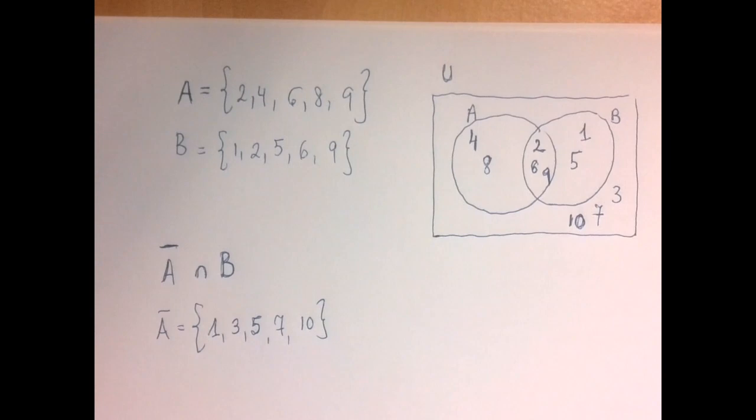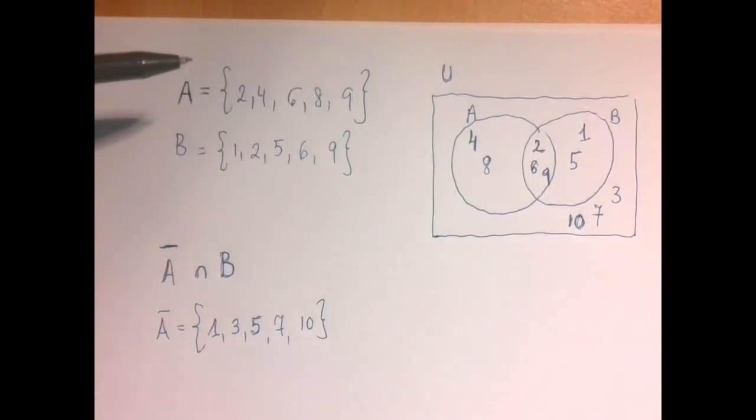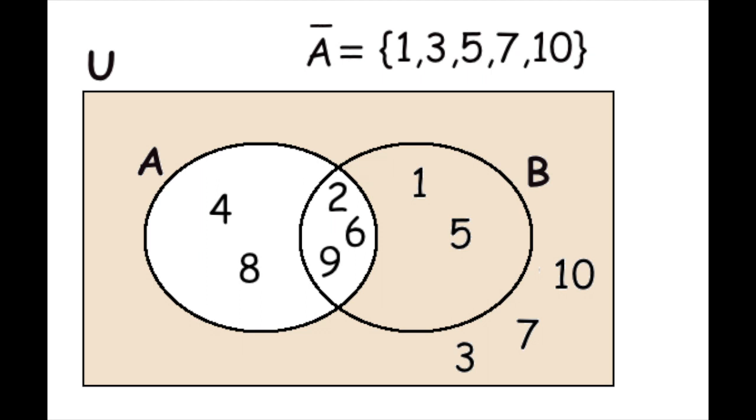So basically a set and its complement should cover the whole universal set, and they shouldn't share anything. Visually, we would be focusing the bubble representing A and everything outside it. So they are grouped together, 1, 3, 5, 7, 10.